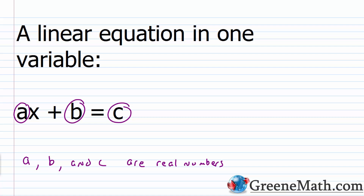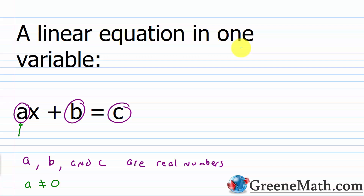There's one exception to this: A, which is the coefficient for X, cannot be 0. So A cannot be 0. Obviously that's the case because we want our variable X to be there. If I put a 0 in for A, 0 times anything is just 0, so the X term would disappear. We would no longer have a linear equation in one variable, so we've got to have that restriction there.